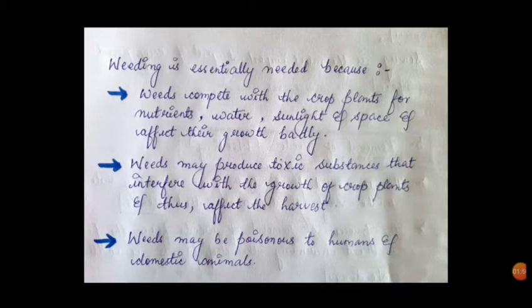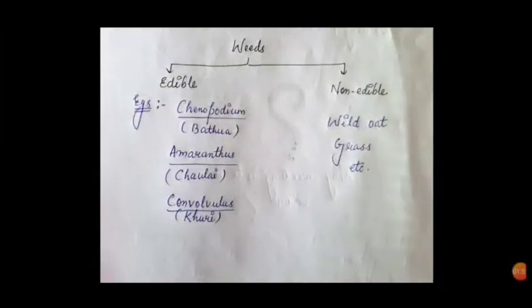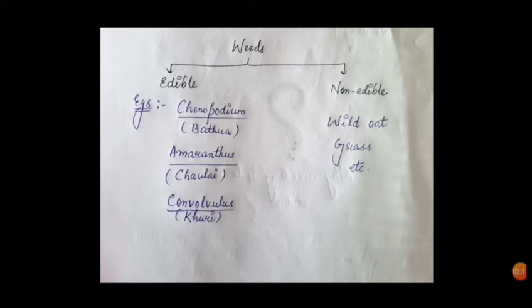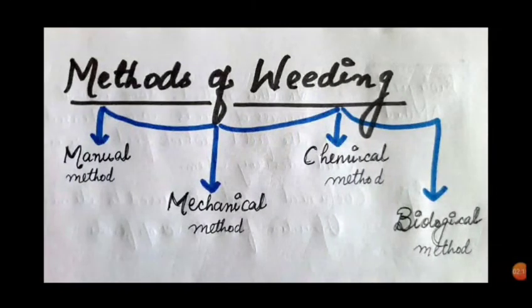Weeds are of two types: edible weeds and non-edible weeds. Examples of edible weeds include Chenopodium, commonly known as bathua; Amaranthus, commonly called cholai; and Convolvulus, commonly called kuri. Non-edible weeds include wild oat grass, etc.